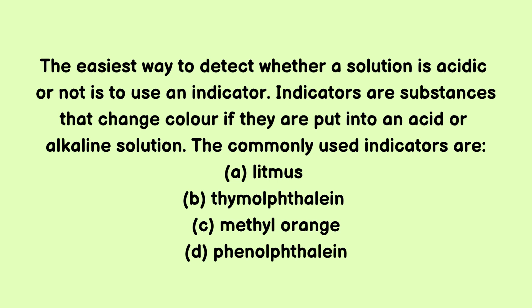The easiest way to detect whether a solution is acidic or not is to use an indicator. Indicators are substances that change color if they are put into an acid or alkaline solution. The commonly used indicators are litmus, thymolphthalein, methyl orange, and phenolphthalein.